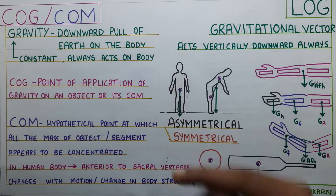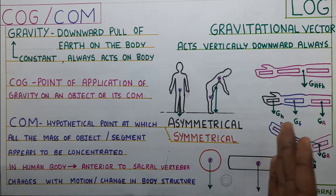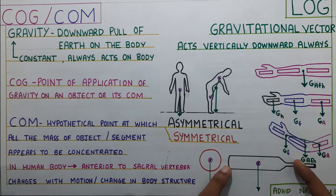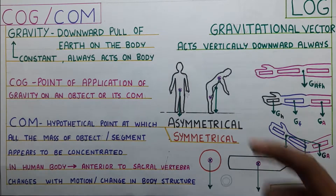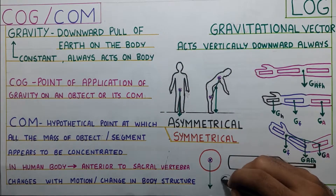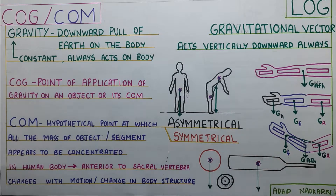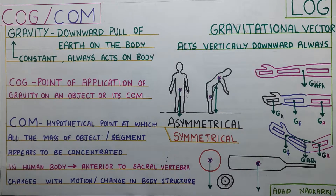Center of mass will change with symmetrical and asymmetrical objects. In a symmetrical object, it will be right at the center — easy to guess. Whereas in an asymmetrical object like a bat, it will be more on the side where there is more mass — more towards the heavier side compared to the lighter grip side. Center of mass does not always have to be inside the object; it can also be outside. For example, for a ring, the center of mass will be in the hollow part of the ring, not in the ring itself.